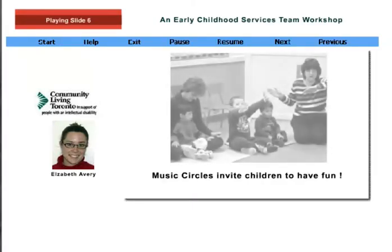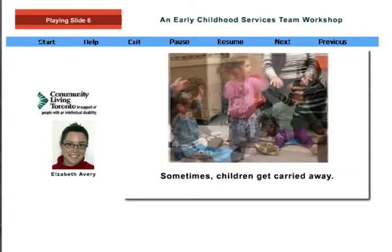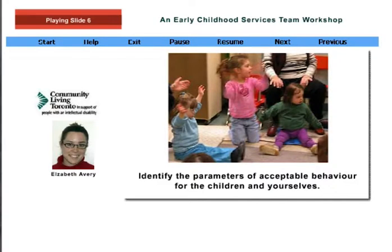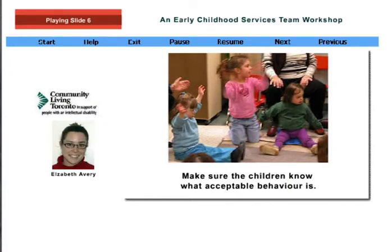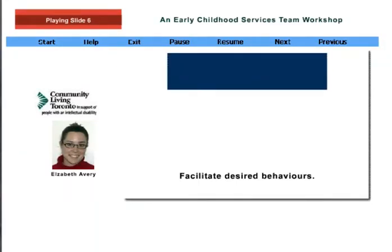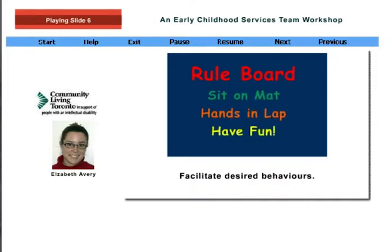Music circles invite children to have fun together while singing and acting out words to songs. Sometimes children get carried away with the excitement of the singing. It is important to identify the parameters of acceptable behavior for the children and yourselves, and to make sure the children know what acceptable behavior is. In order to facilitate the desired behaviors, it may be helpful to set up a rule board with no more than three rules stated in a positive manner — these will probably include something such as sit on mat, hands in lap, and have fun. Review the music circle rules every day at the beginning so everyone is clear on the expectations.